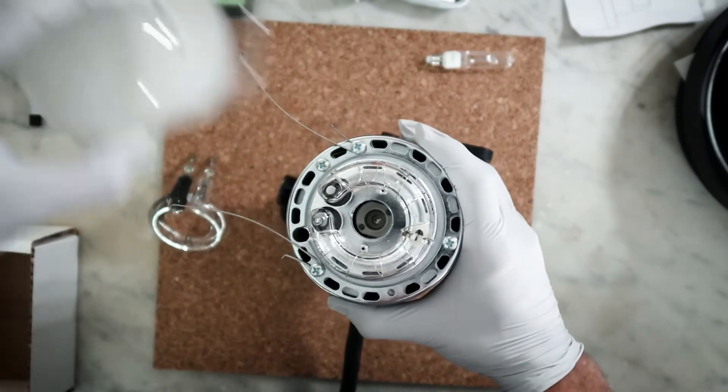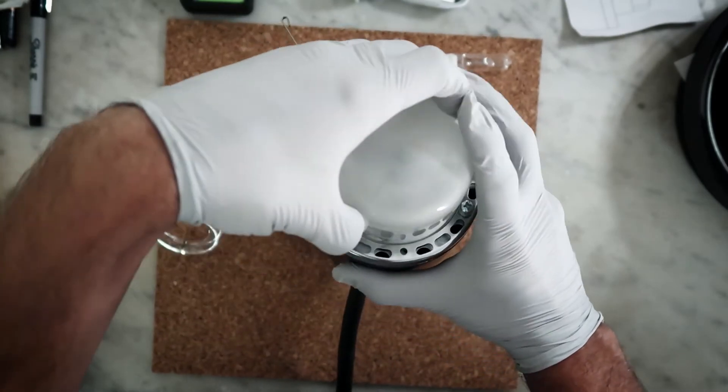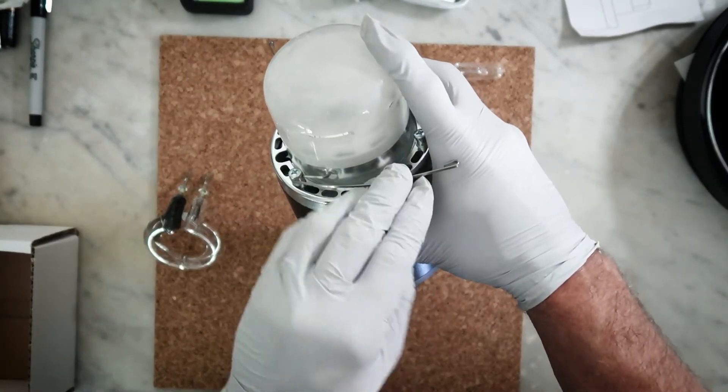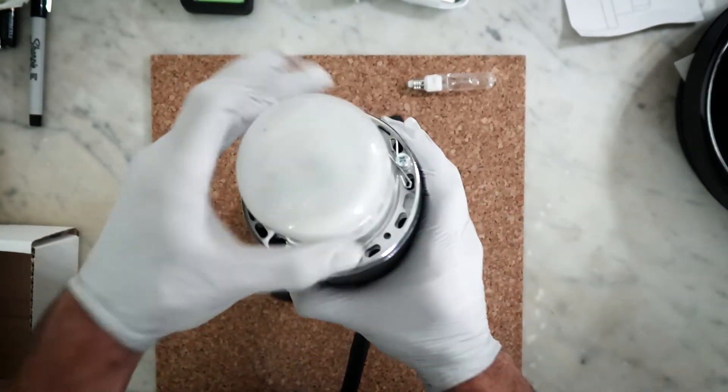Grab that glass cover, put it back on. Now when you put your spring clips back on make sure the little tabs line up with the holes in the glass dome. Make sure that's secure.